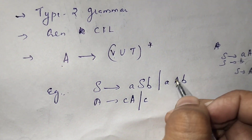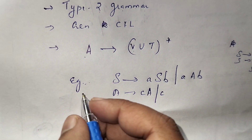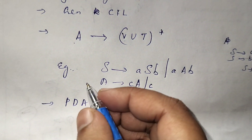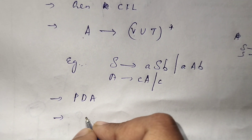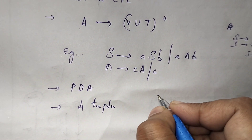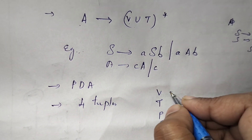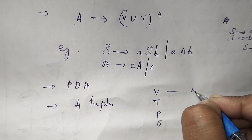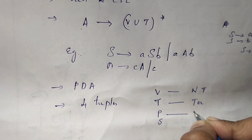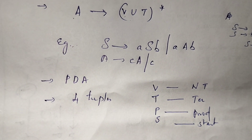Context-free grammar is recognized by pushdown automata, which I will explain in upcoming videos. Every context-free grammar is represented using four tuples: V, T, P, S — where V is the set of non-terminals or variables, T is the set of terminal symbols, P is the set of production rules, and S is the start symbol.